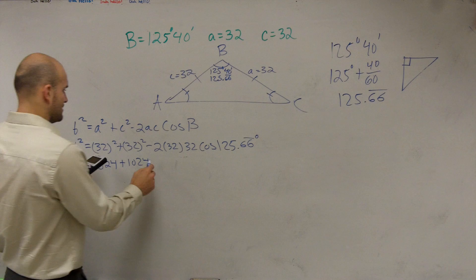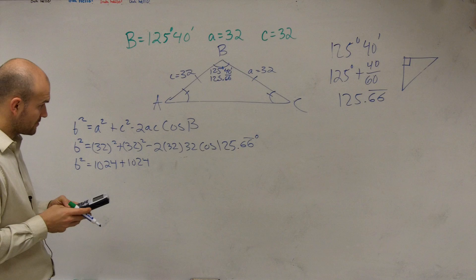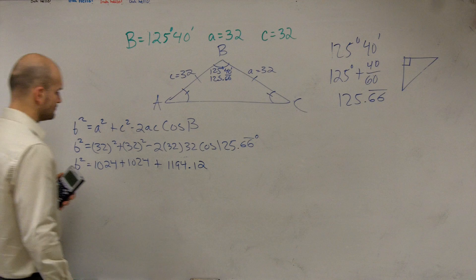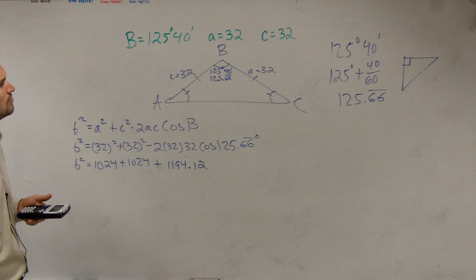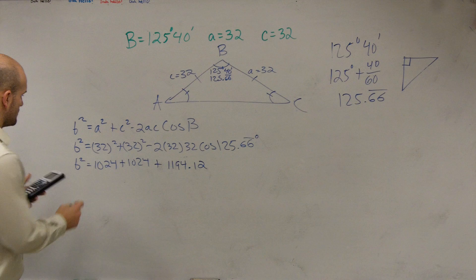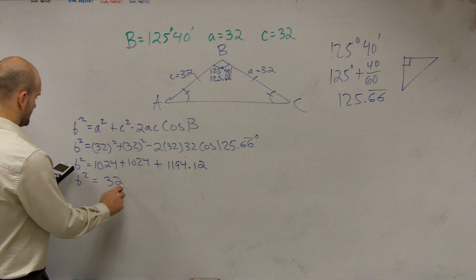And that's going to give me, because the cosine of 125. Okay. That gives me a positive value of 1194.12. So then I can go ahead and add these up. 1024 plus 1024 plus